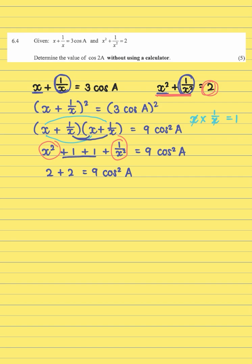All right, so now what we can do is we can actually simplify this. We have 4 is equal to 9 cos squared A. Now from there we can say that cos squared A is going to be equal to 4 over 9. Now how do we go from this to cos 2A? Because that is what they're asking us to do. Guys, we need to remember our double angle identity.